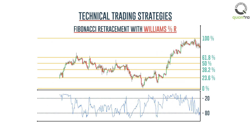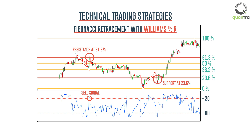For the sell signals, make sure that the price is at the Fibonacci resistance level after a downtrend movement, and the Williams Percent R indicator crosses above the minus 20 line from the top of the overbought area. And for a buy signal, check that after a bullish movement, the price has retraced up to the support retracement level, and the Williams Percent R indicator crosses below the minus 80 line from the bottom.